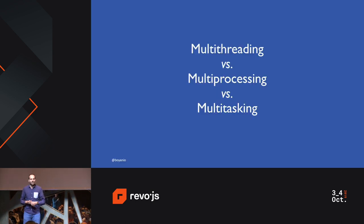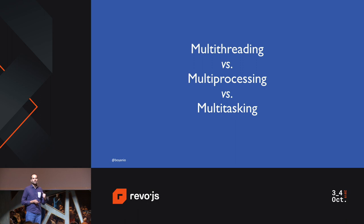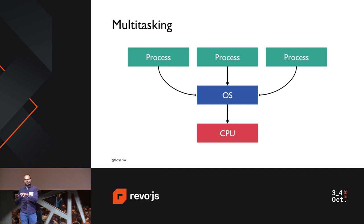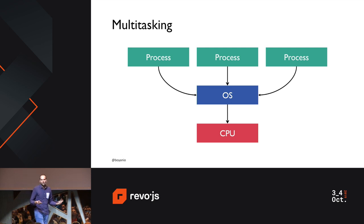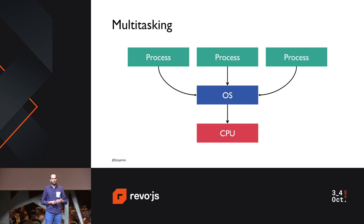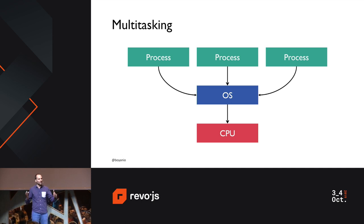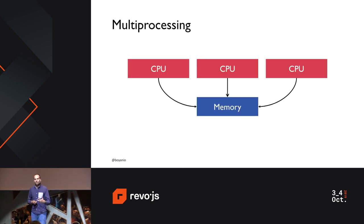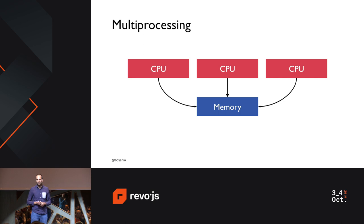Multi-threading is often confused with multitasking and multiprocessing. Multitasking is the ability of your operating system to run different tasks or processes concurrently on the same CPU — for example, running the browser, Visual Studio Code, or a word processor simultaneously. Multiprocessing is really adding more CPUs or more cores to improve computing efficiency — scaling the CPUs up.